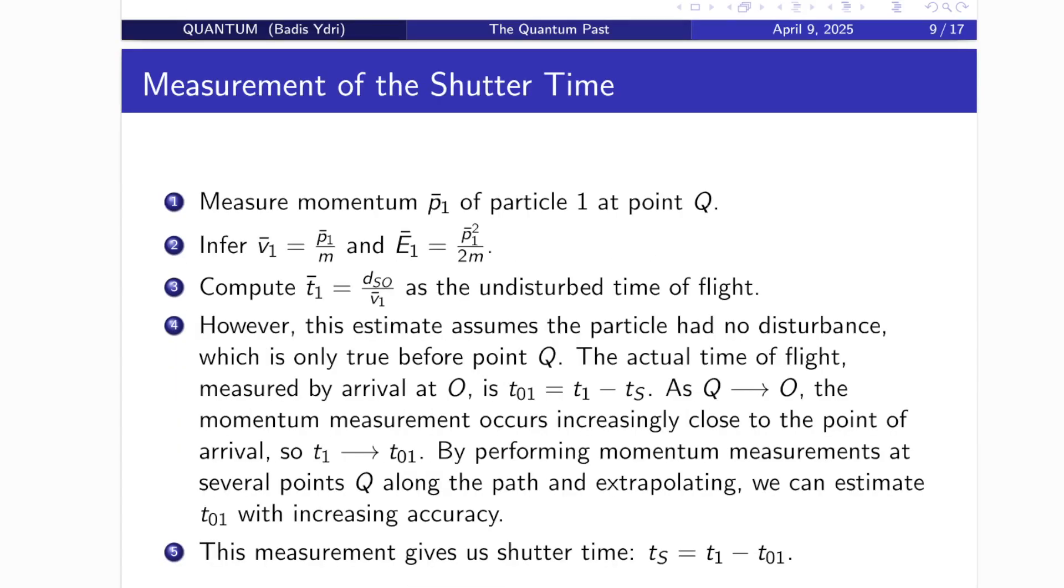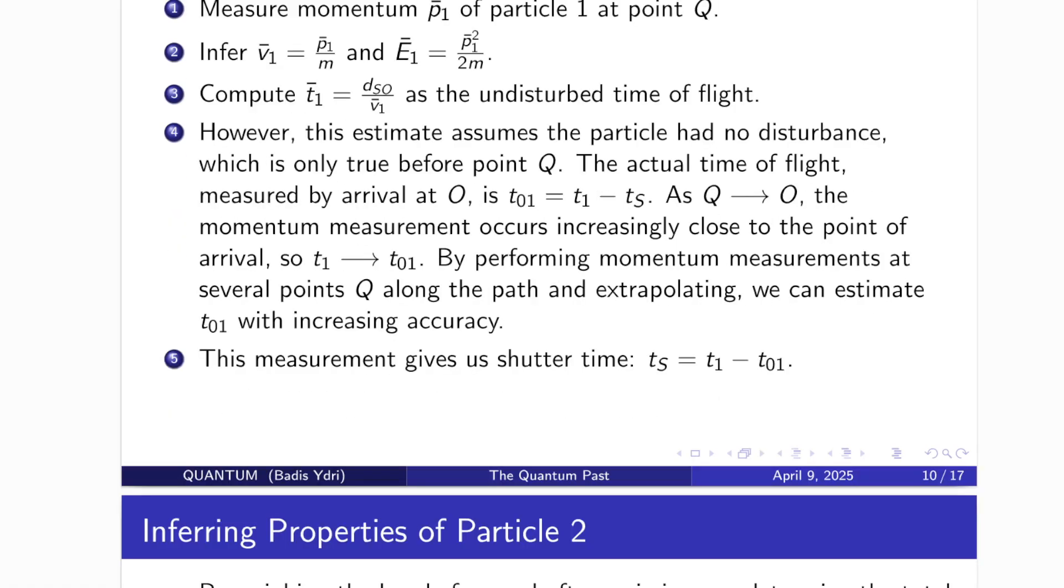Part 3, Measuring the Shutter Time. Here's how the observer attempts to determine when the shutter opened. Step 1, they measure the momentum of the first particle at point Q. Step 2, from this, they infer the particle's velocity and energy. Step 3, using the known distance from the source to the observer, they compute what the particle's flight time would have been if it had not been disturbed after the measurement. But here's the catch. That assumption is only valid up to the point of measurement, Q. The actual time of flight is T1 minus T sub S. However, as point Q gets closer to the observer, our inferred time approaches the true flight time. By repeating this measurement at various Q positions and extrapolating, the observer gets an increasingly accurate estimate of the actual flight time. From this, the shutter time is inferred as T1 minus that extrapolated flight time.